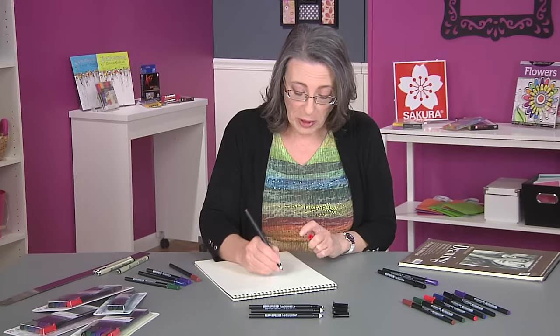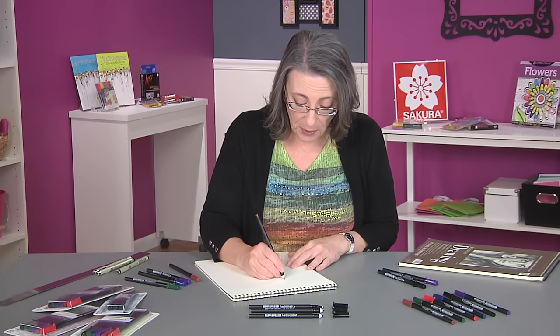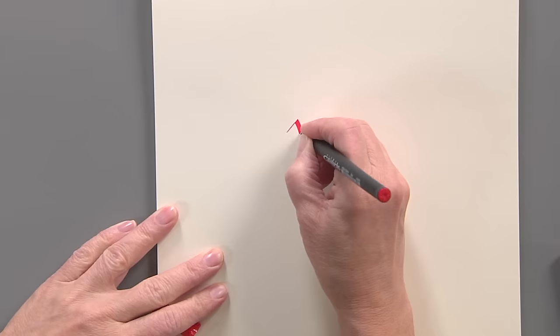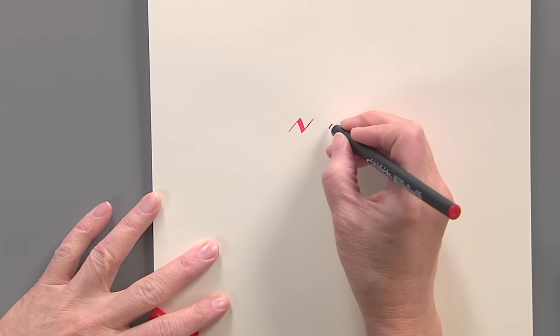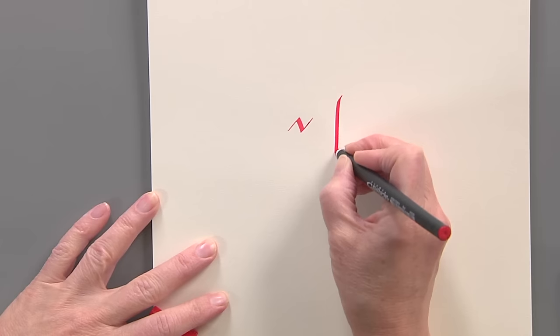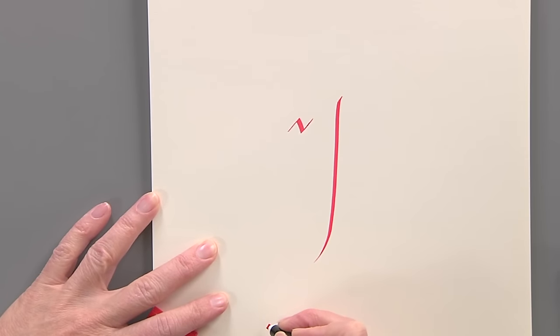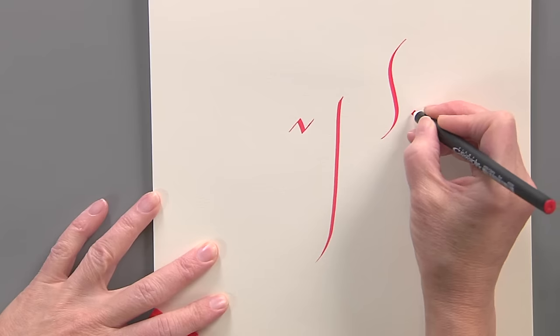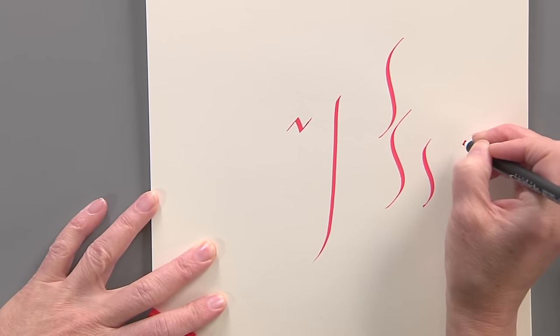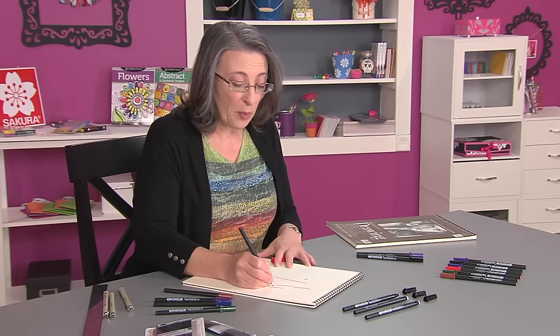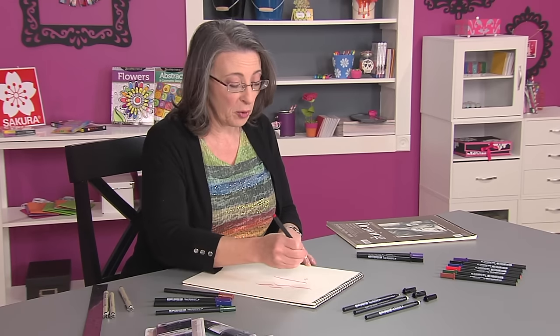Let me show you how to hold the pen. You want to hold it almost perpendicular to the paper so that you can get the best line quality. Firm, even pressure is ideal. Notice how I'm moving my entire arm. You will get the best results from your lettering if your fingers are not planted here, but you're moving freely from your arm.